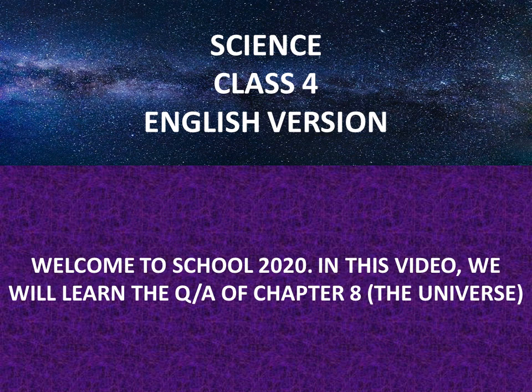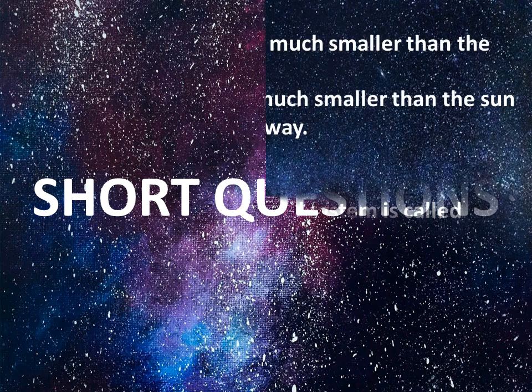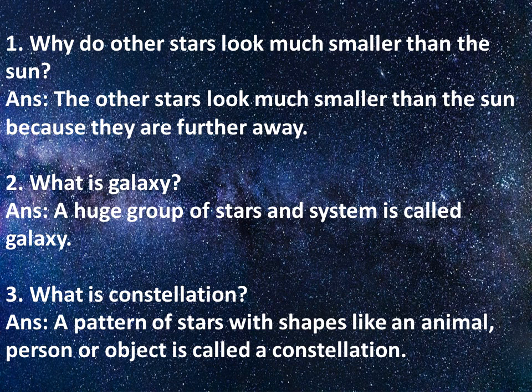Welcome to School 2020. In this video we will learn the question answers of Chapter 8: The Universe. Short questions. Number one: Why do other stars look much smaller than the Sun? Answer: The other stars look much smaller than the Sun because they are further away.